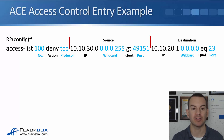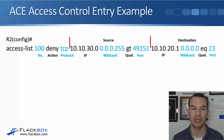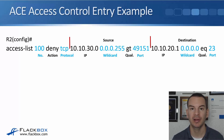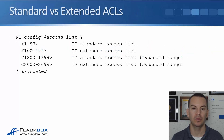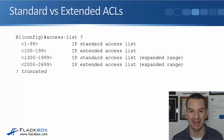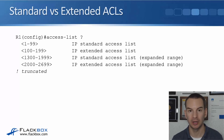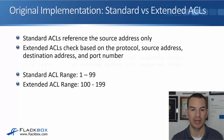You saw this slide in the last lecture — that's the format of the command when we're building our ACLs. At global config, we start with 'access-list' and then a number. If it's numbered from 1 to 99, it's an IP standard access list. If it's from 100 to 199, then it's an extended list.